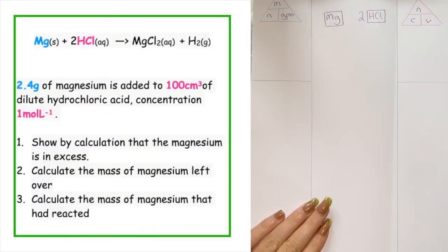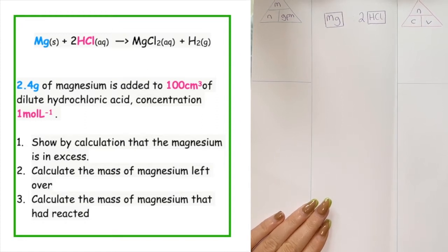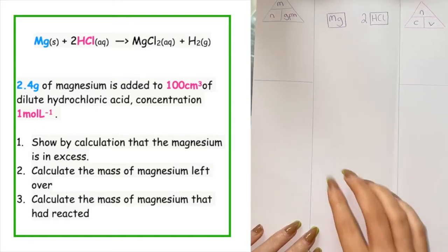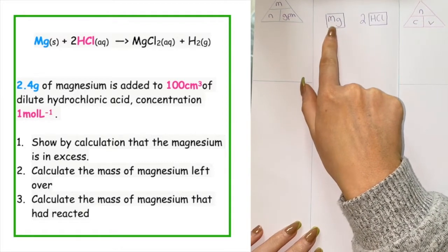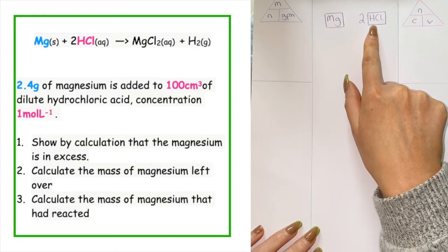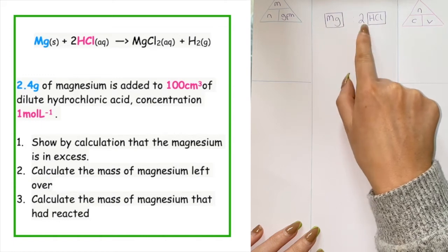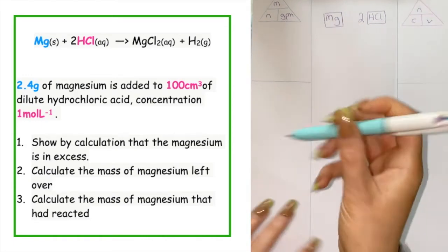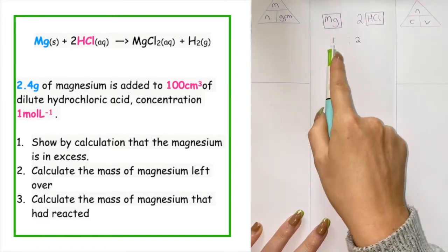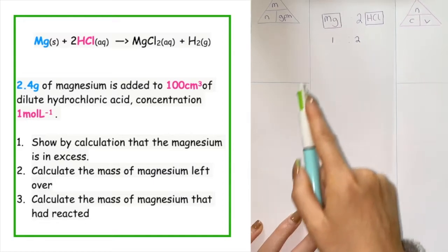When we want to calculate excess or limit, we are working with our reactants. From the balanced equation, we can see that on the left-hand side, that's where our reactants are — we have one magnesium and two hydrochloric acids. What we want to do is calculate the number of moles, as we have a mole ratio from our balanced equation. We can see that our ratio is a one-to-two ratio for magnesium to hydrochloric acid.